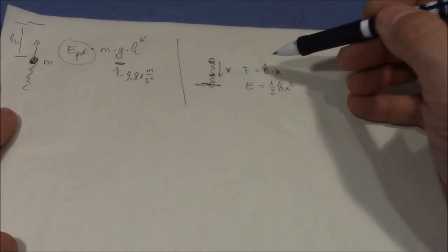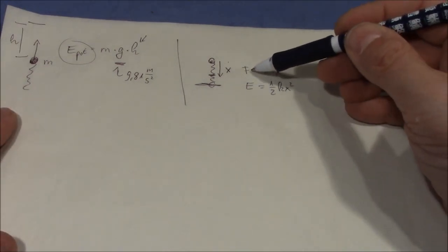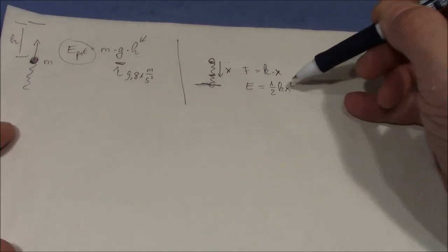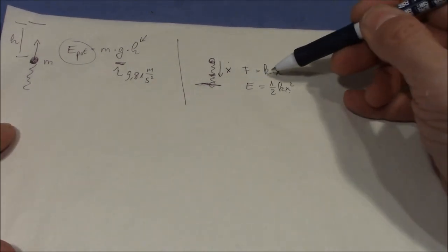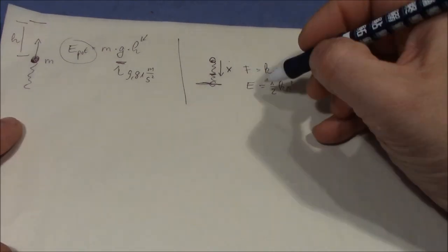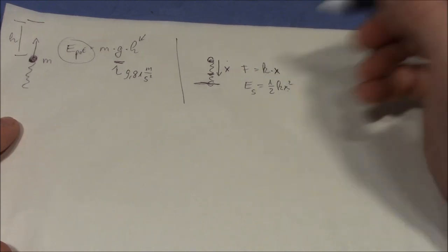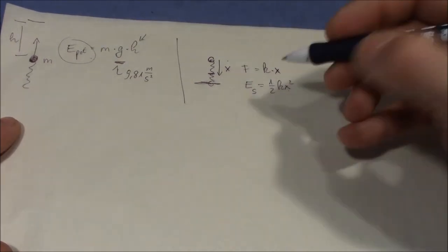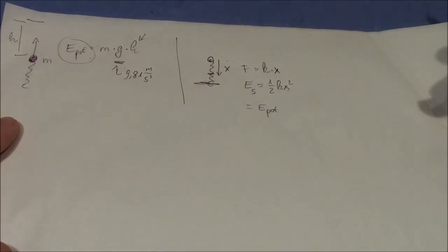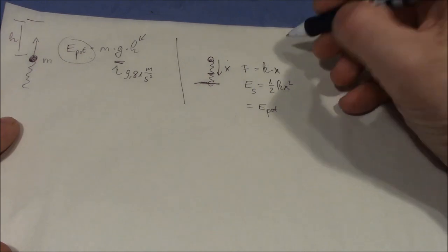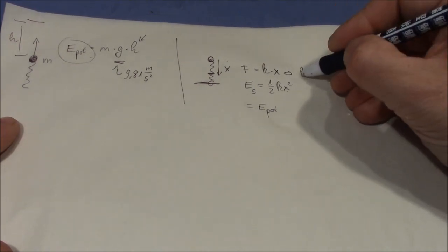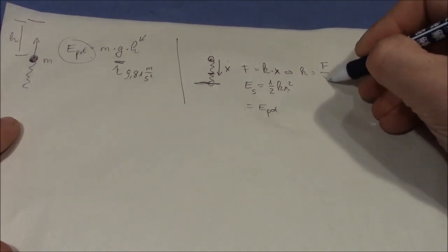That's because the force is the derivative of the energy by the distance, and that's exactly kx if we derive this by x. So that's the energy - the spring energy - which is equal to the potential energy. We can eliminate k from this equation.